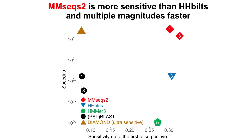We measured sensitivity and speed and ended up with a quite surprising result: MMSeqs2 can be as sensitive as HHBlits, while sequence-based search methods all perform fairly similarly, aside from HMMER which is more sensitive. The other sequence-based methods have a really hard time aligning the sequences, which makes sense because we pruned away everything that is a close relative to the query.